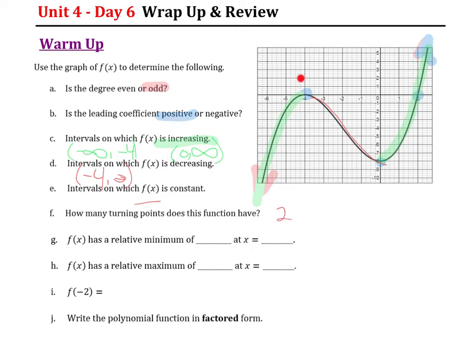It's got a relative minimum, a low point of negative eight, and that happens at the x value of zero. It's got a relative maximum, a peak right here. The y value is zero, and that happens when x is negative four. So it has a relative max of zero when x is negative four.